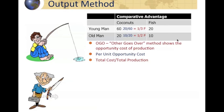Now we figure out the young man's opportunity cost in terms of fish production. We take the total cost when he focuses on fish over total production: 60 over 20, which breaks down to three coconuts. So every time he collects a fish, it costs him the opportunity to produce three coconuts. For the old man, every time he collects a fish, it costs him the opportunity to collect two coconuts.